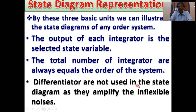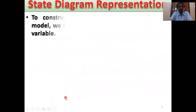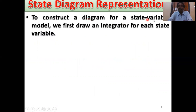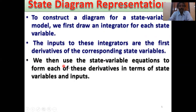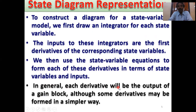Differentiators are not used in the state diagram as they amplify the inflexible noise. This is also a very important point, because if we choose a differentiator, they amplify the inflexible noise. To construct a diagram for a state variable model, we first draw an integrator for each state variable. The input to these integrators are the first derivatives of the corresponding state variables. We then use the state variable equations to form each of these derivatives in terms of state variables and inputs. In general, the derivative will be the output of a gain block, although some derivatives may be found in a simpler way.